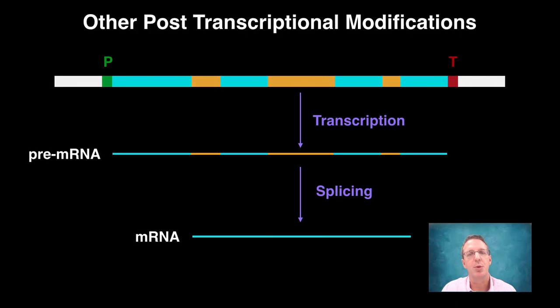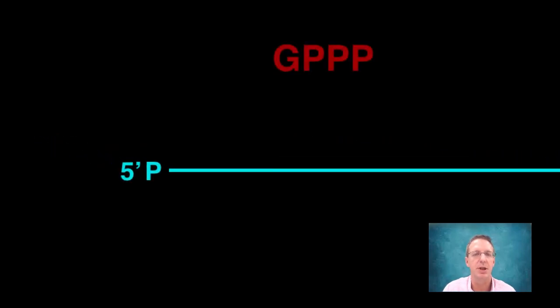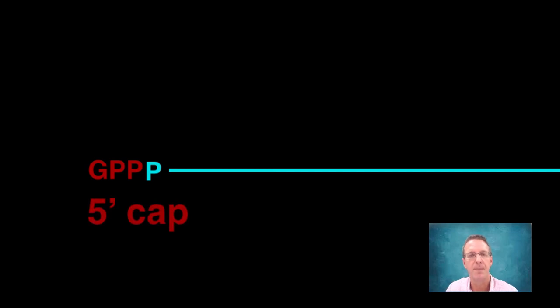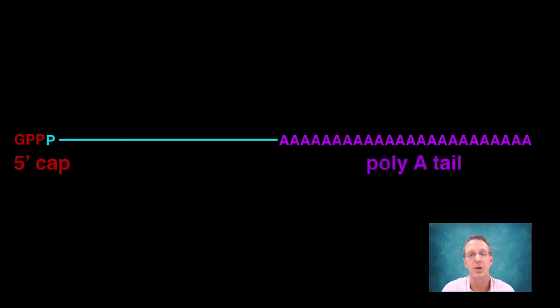After your mRNA is produced via the splicing mechanism, there are two other post-transcriptional modifications that take place. So, here we have the mRNA with its 5' and 3' ends. The first modification is to take a GTP nucleotide and add it on backwards onto the 5' end of the mRNA, forming what is called a 5' cap. The second modification occurs at the 3' end, and that is when a different RNA polymerase adds between 100 and 250 A nucleotides onto the 3' end of the mRNA. So, for obvious reasons, this is called a polyA tail.